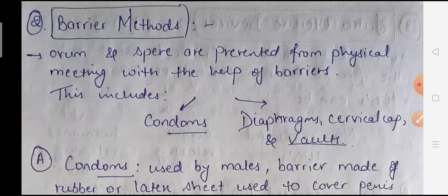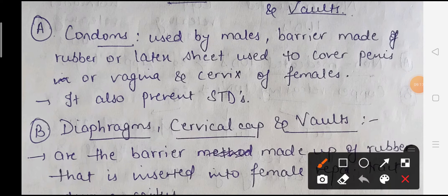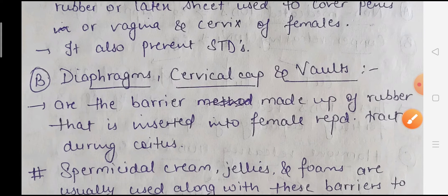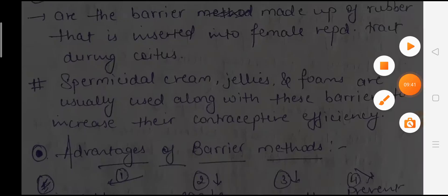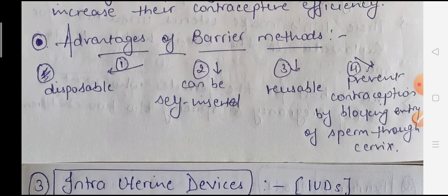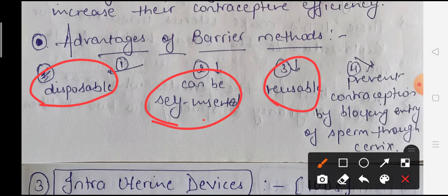The second category is the barrier method, where the ovum and sperm are prevented from physically meeting with the help of barriers, thus preventing fertilization. This includes condoms, diaphragms, cervical caps, and vaults. Condoms are used by males and are barriers made of rubber or latex sheets used to cover the penis, and for females cover the vagina and cervix; they also prevent STDs (sexually transmitted diseases). Cervical caps and vaults are rubber barriers inserted into the female reproductive tract during coitus. Spermicidal creams, jellies, and foams are used along with these barriers to increase contraceptive efficiency. Advantages of barrier methods include that they are disposable, can be self-inserted, some are reusable, and they prevent conception by blocking sperm entry into the cervix.